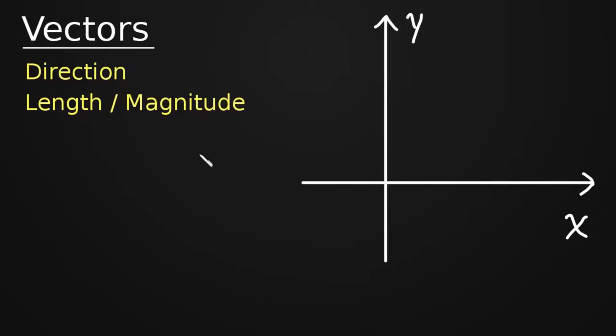And so how could we attempt to capture direction and length? Well, I think an arrow does a pretty good job. This, for instance, captures direction. It's moving in the northeast direction. And it also clearly has a certain length. And so this is a vector. And that's exactly how we graph vectors, just as arrows.